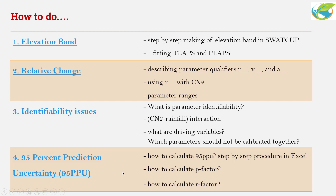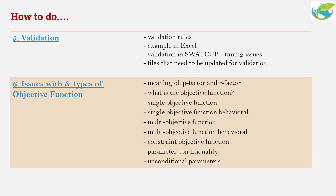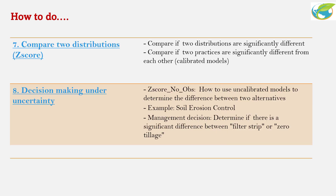In how-to video number five, I describe what 95% prediction uncertainty is and how you can calculate this in Excel. In video number five I also talk about validation — or how you should choose the validation data. In video number six, we have issues with types of objective functions, and there are many different types of objective functions that I discuss.